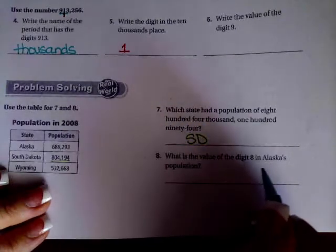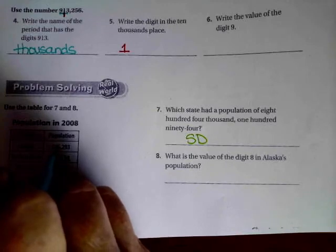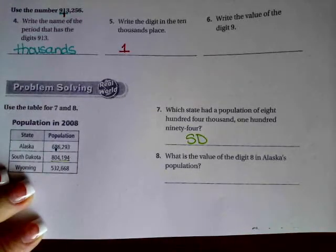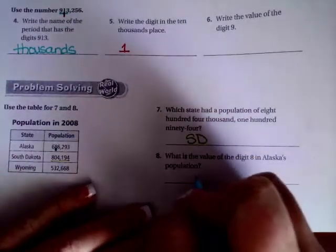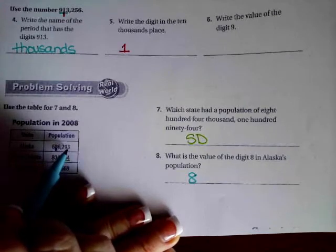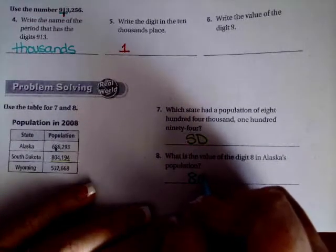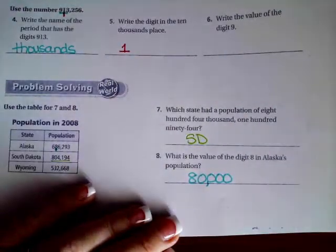What is the value of the digit eight in Alaska's population? Well, Alaska's population is here, so that's our digit eight right there. We're going to drop down that eight, and then we have one, two, three, four numbers behind that, so we're going to make one, two, three, four zeros. That is eighty thousand.